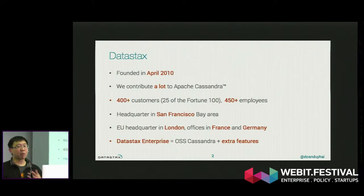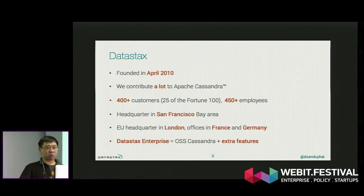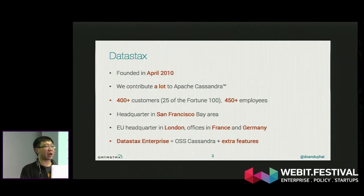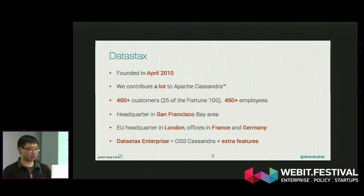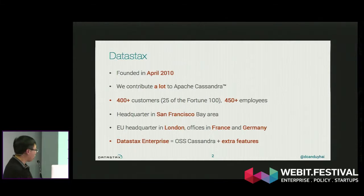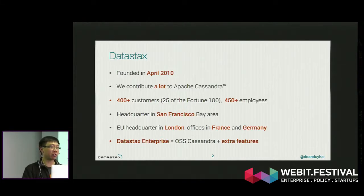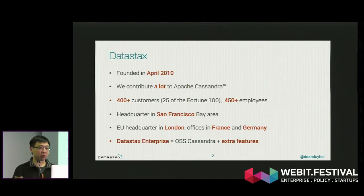I am working for DataStax. Apache Cassandra is an open-source project — it's free, it belongs to the Apache Foundation. DataStax is a commercial company. We contribute the most to Apache Cassandra because most of the committers are employees of DataStax. The idea is to provide an enterprise version of Cassandra: you take the open-source product, add some extra features, and it gives you the enterprise product. This is the business model — it is very classical.